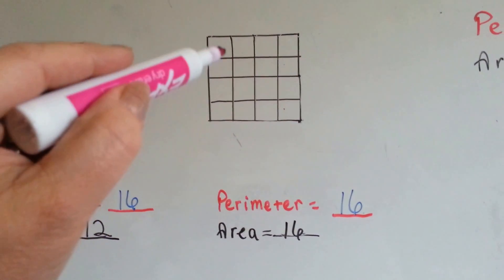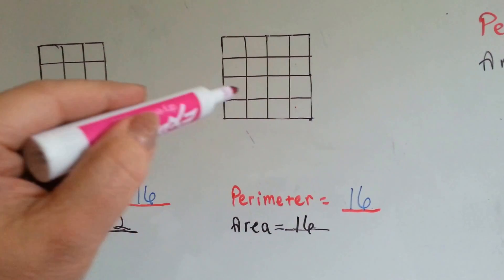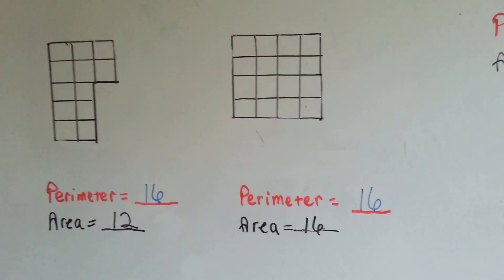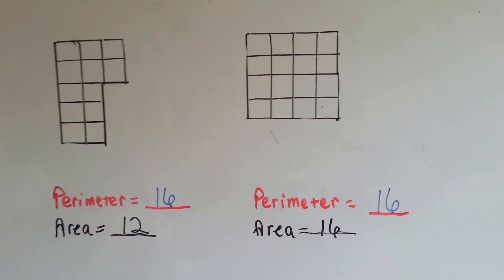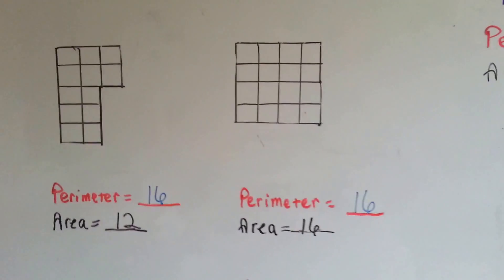But the area is 4, 8, 12, 16. So the perimeter is the same, but the area is different, because they're two completely different things.